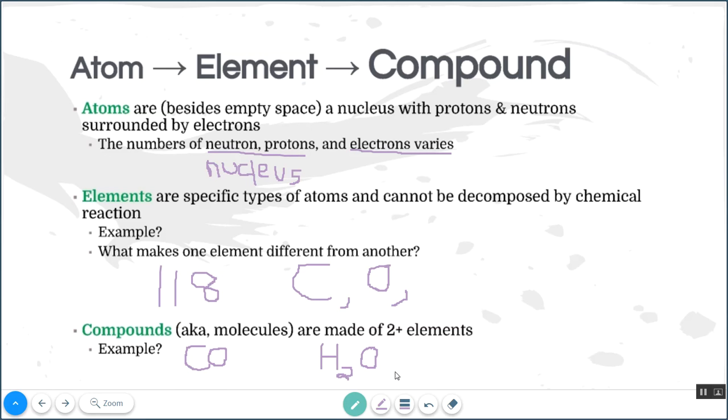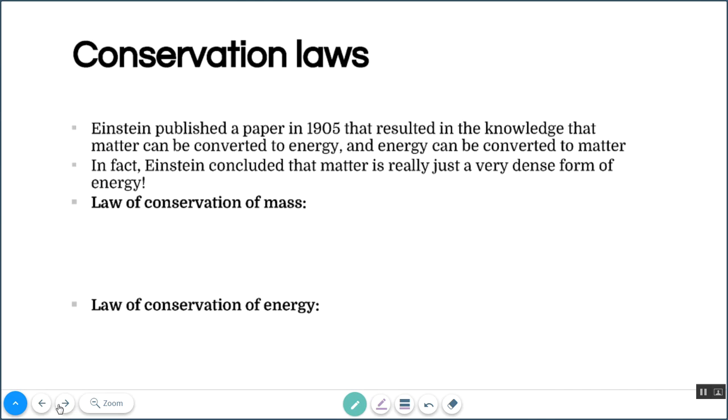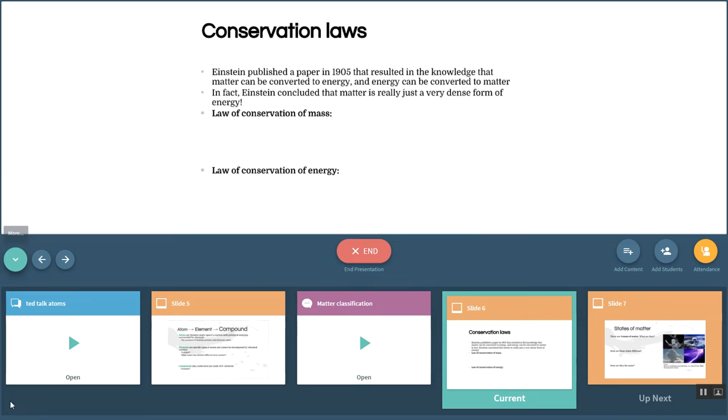All right, so in top hat, go ahead and take a look at this question and tell me which one of these four options is a compound, meaning made out of two or more individual elements. Okay, we're going to pick up here in the next video. Thanks for watching.